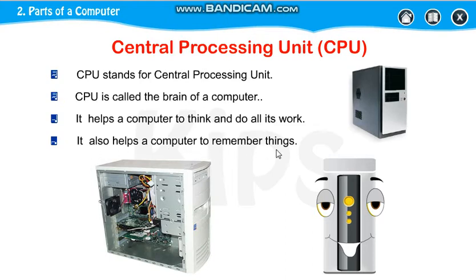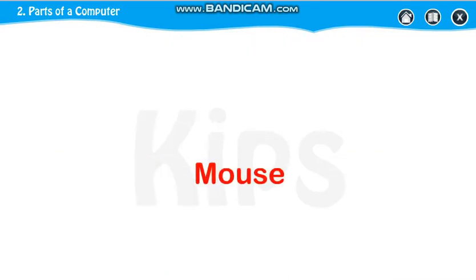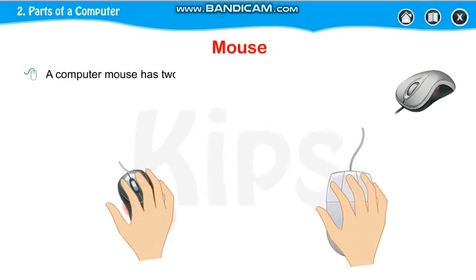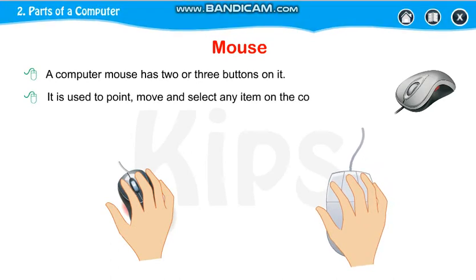It also helps the computer to remember things. Now, mouse — what is a mouse? A mouse has two or three buttons. This mouse is having two buttons; you can keep your fingers on it like this. Some mice have three buttons. Mice with two buttons have one scroll wheel, which is used to move up and down on the screen. This wheel is known as the scroll wheel. It is used to point, move, and select items on the computer. With the mouse, we can click on anything, move it anywhere, or select any item.